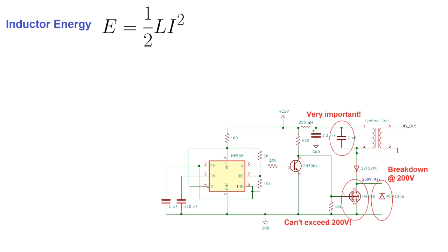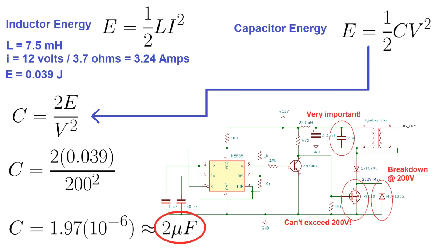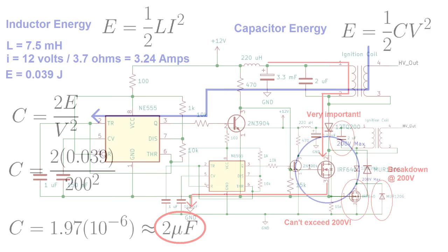I know the energy of my inductor, and when current is shut off, that energy is all going into the parallel capacitor. By rearranging the formula for capacitor energy and solving for capacitance, I can find out the capacitor value I'll need to keep the voltage spike from exceeding 200 volts.